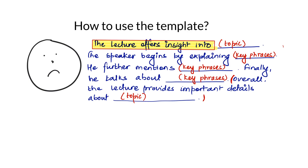In the previous two screencasts you have already seen information about summarize spoken text and how it is assessed. In this one you are going to see how to use the template in the right way so that you can fulfill all those five criteria discussed in the previous video. If you look at the template, you can see that there are in total five gaps that you need to fill in the right way to get the score you desire.